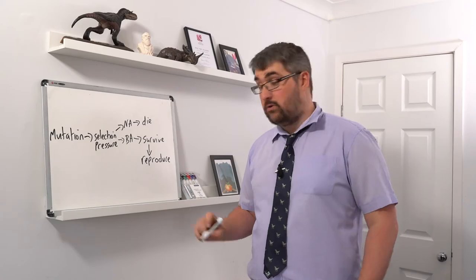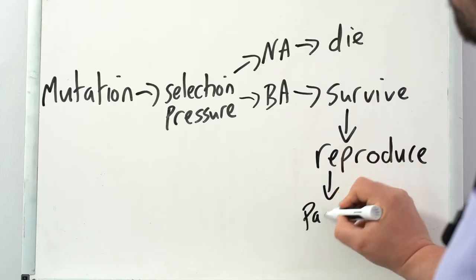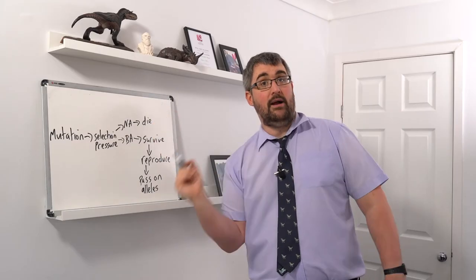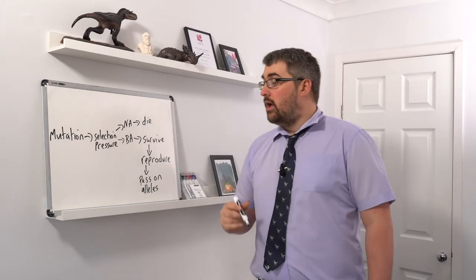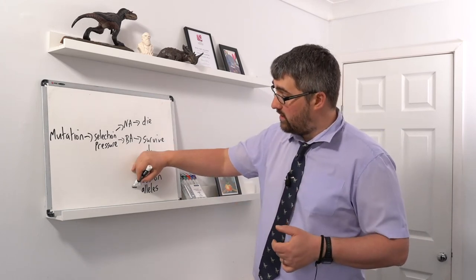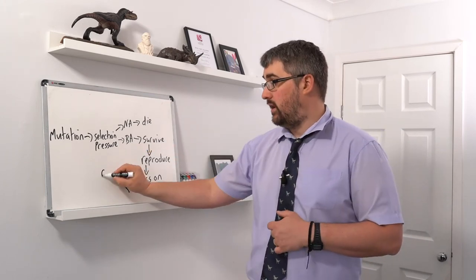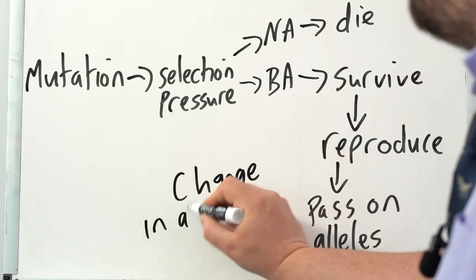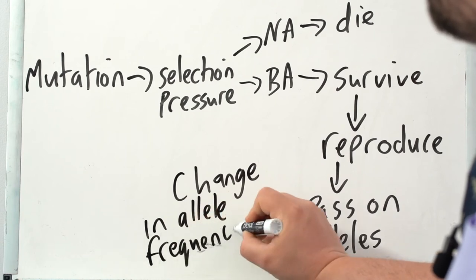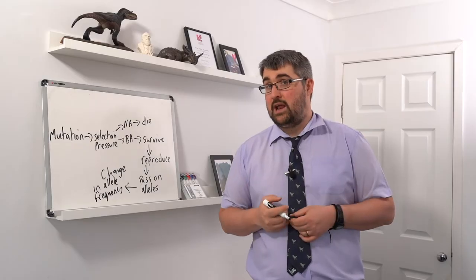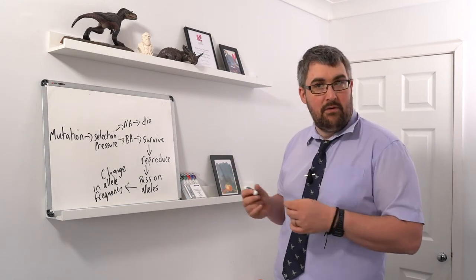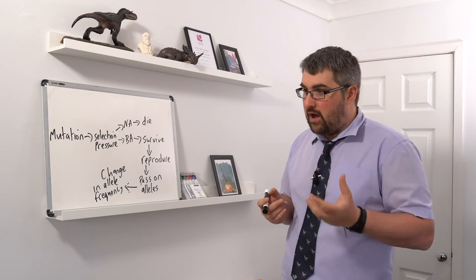Over many generations of this cycle repeating, we see a change in allele frequency — that's an important point to make in exam answers. We're seeing evolution happen: a change in the allele frequency of our population.